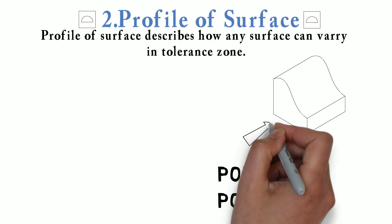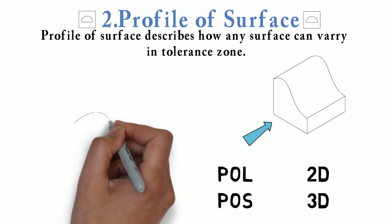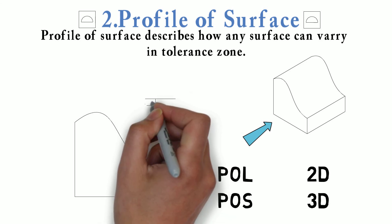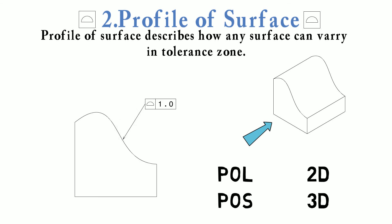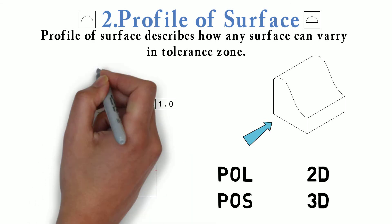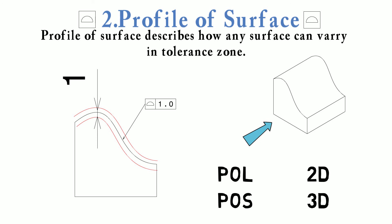Consider our previous example. Previously we gave a profile of line; now we want to control profile of surface. We will call out our feature control frame with a leader up to the surface which we want to control. Here we have given 1mm as profile of surface tolerance. This means if we draw two parallel surfaces to our true profile which are 1mm apart, then the actual surface should lie in between these two surfaces. In 3D, it should look like this — this is the first profile, this is the second profile, and this is the actual profile which should lie in between these.